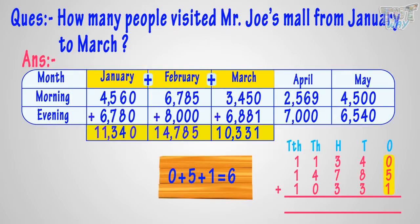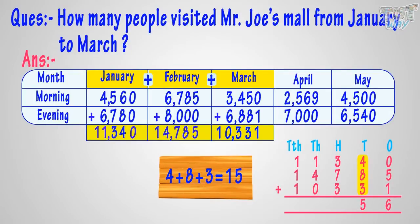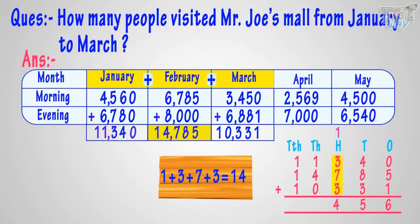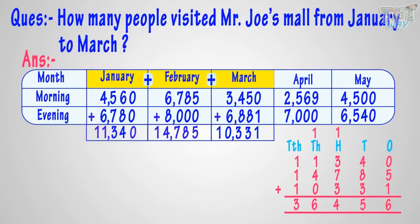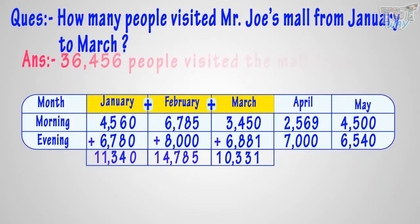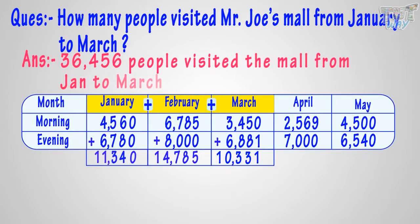Adding 0 plus 5 plus 1 equals 6, so write 6 in the sum at the 1's place. Adding 4 plus 8 plus 3 equals 15. Write 5 at the 10's place in the sum and carry over 1 to the 100's place. Adding 1 plus 3 plus 7 plus 3 equals 14. Write 4 in the sum at the 100's place and carry over 1 to the 1000's place. Adding 1 plus 1 plus 4 plus 0 equals 6, and 1 plus 1 plus 1 equals 3. We get 36,456. So 36,456 people visited the mall from January to March.